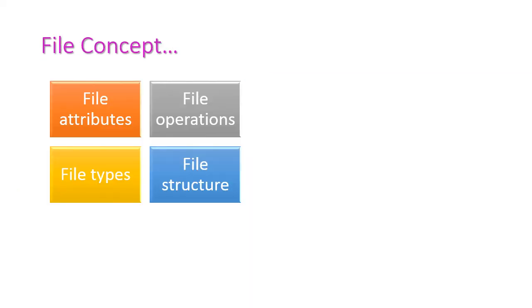In the file concept, four things are important. The first one is file attributes, which are used to identify the file. Second one is operations, that is file operations performed on the file. Third one is file types, different types of files. And the last one is file structure. All these things we will see in the next class.